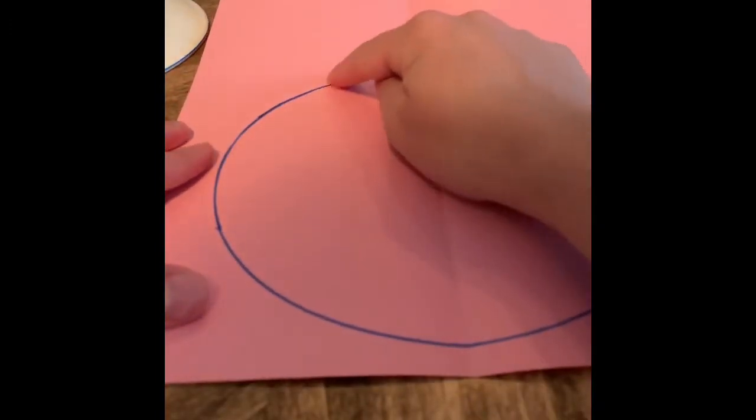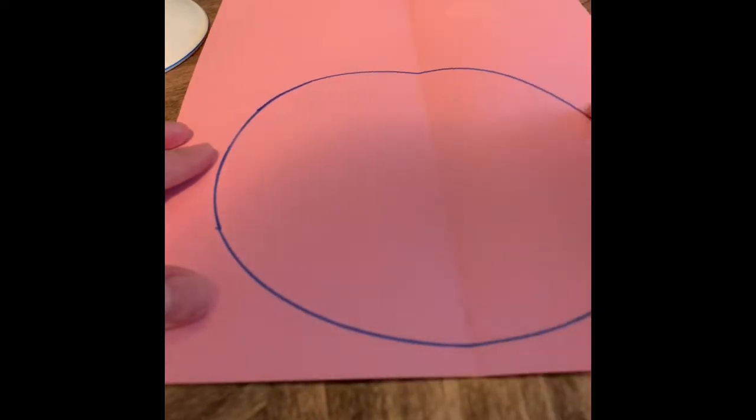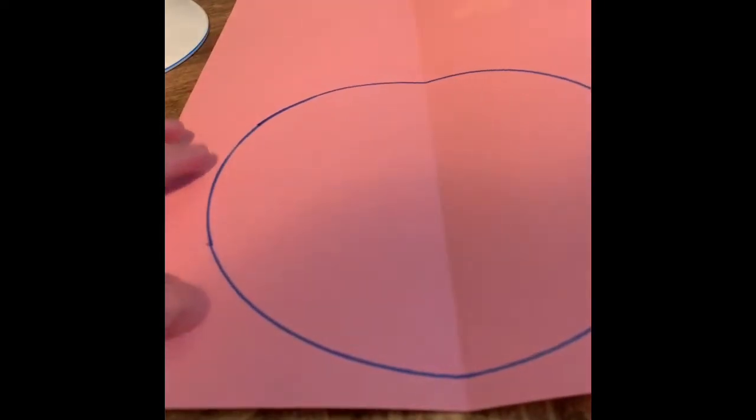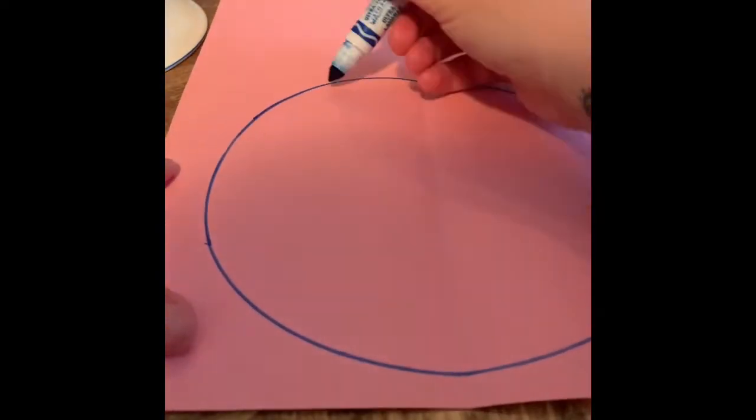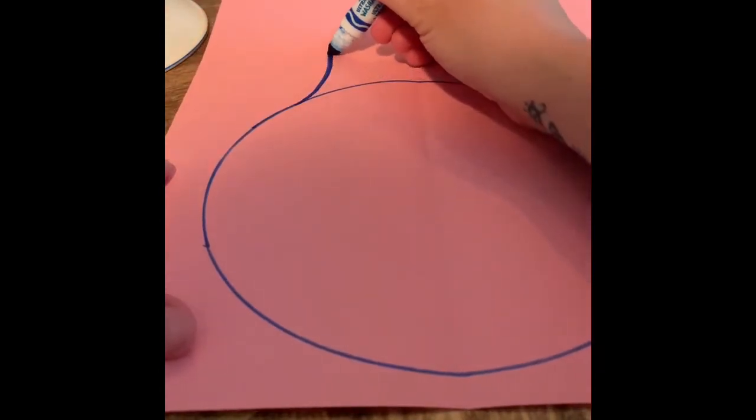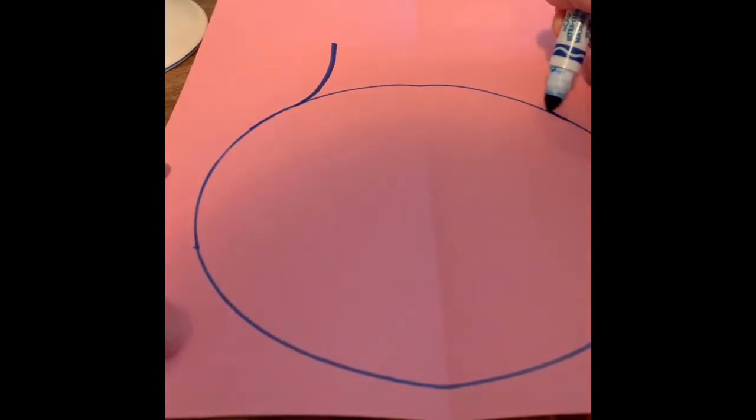Once we have our circle drawn we're going to need to add some lines to complete the shape of our hot air balloon. You can draw those in or you can just cut them when the time comes to cut out your shape.